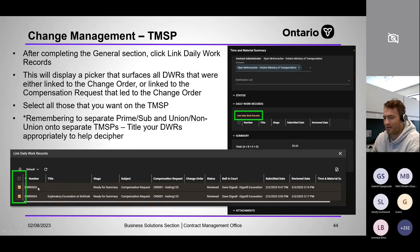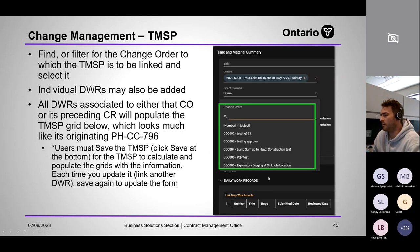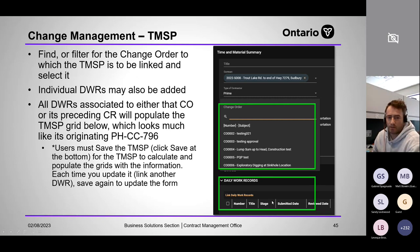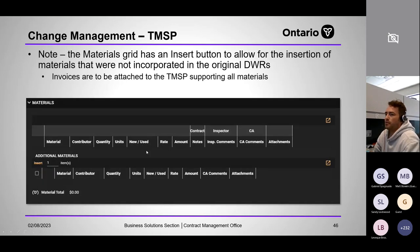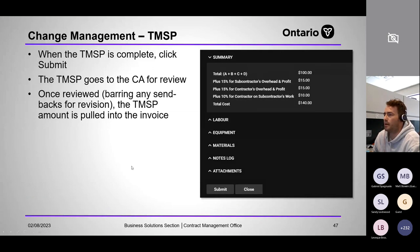In the change order section, select prime or sub, choose the change order, and link daily work records. You can also link individual DWRs for one-offs you might have missed. In the notes section there's a materials grid — materials should be supported by an invoice where possible. When completed, click Submit or Save — it auto-calculates and shows the total of that individual TMSP. The TMSP is then pulled into the invoice and sits there, enabling progressive payment without changing or closing the change order.